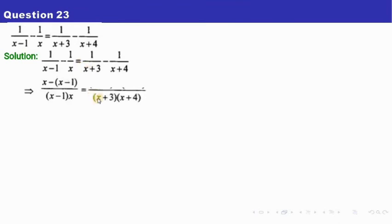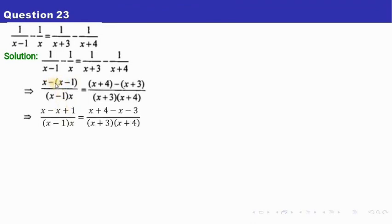The LCM for the right hand side will be x plus 3 into x plus 4. Divide this LCM by x plus 3. So x plus 3 and x plus 3 get cancelled and x plus 4 will be left. So x plus 4 into 1 is x plus 4. Minus will come. Again divide this LCM by x plus 4. x plus 4 and x plus 4 get cancelled, so we get x plus 3 into 1 is x plus 3. Now open the bracket — since there is minus, everything becomes the opposite sign. The minus will change all the signs inside the bracket. The x terms get cancelled on each side.